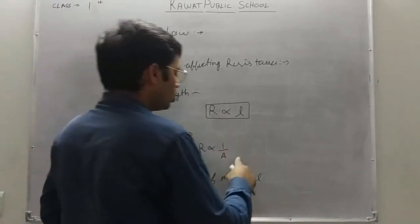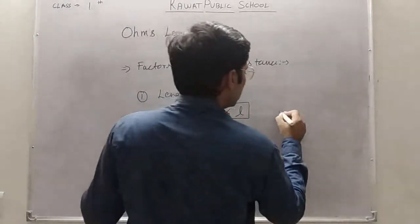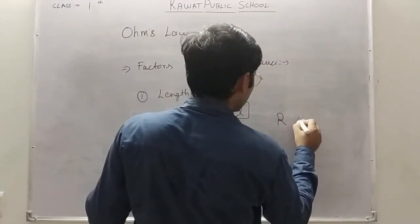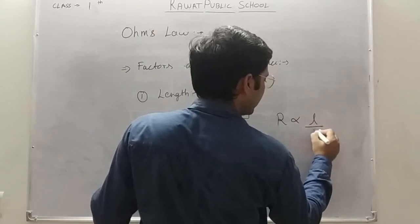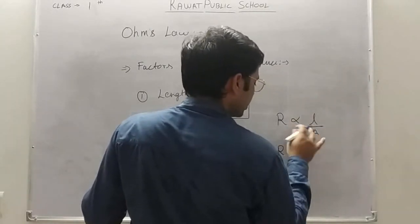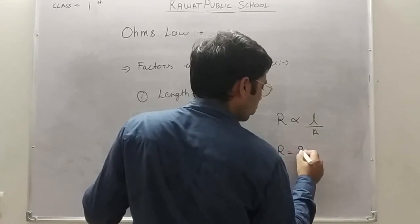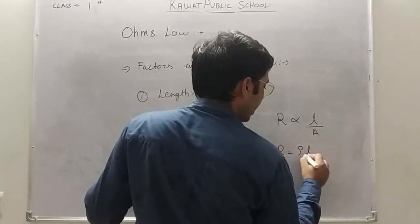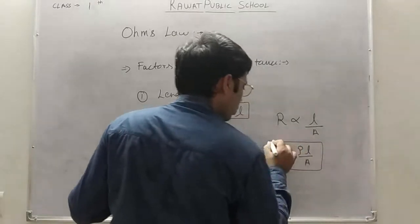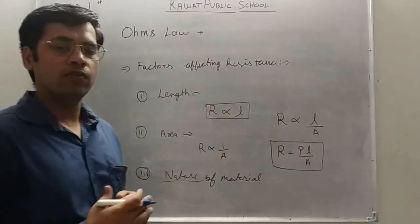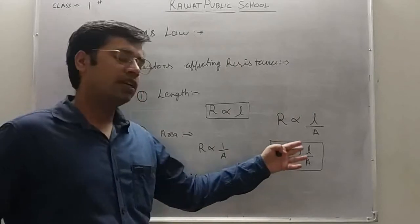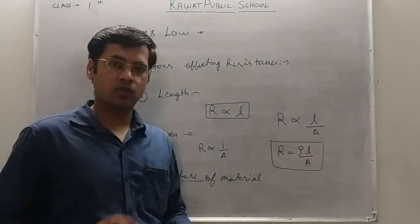If we combine both equations, resistance is directly proportional to L divided by A. Introducing the proportionality constant rho, we get R = ρL/A. This formula tells us the relationship between resistance, length, and area.